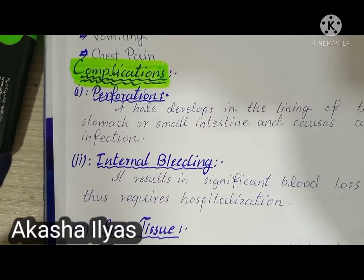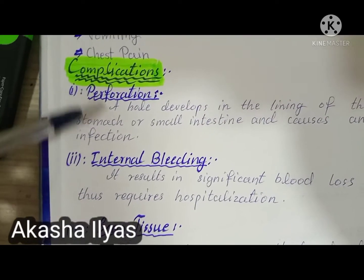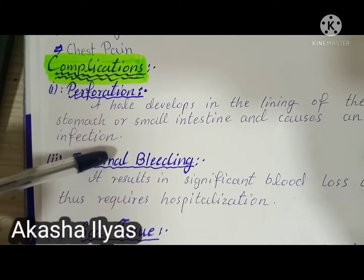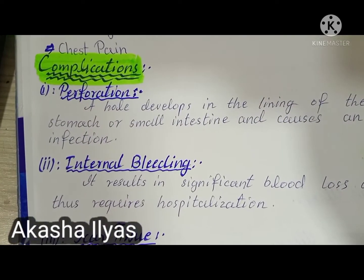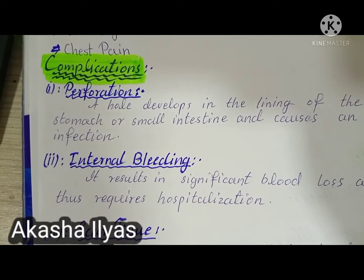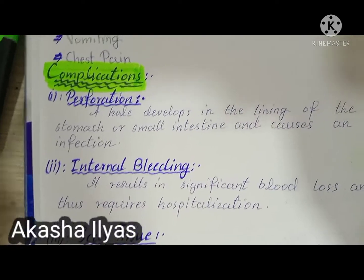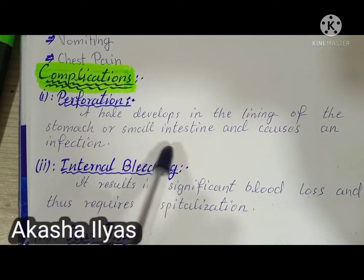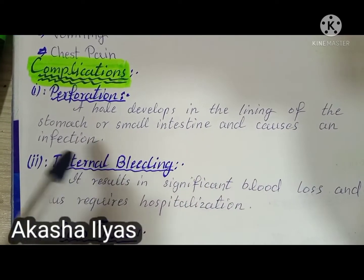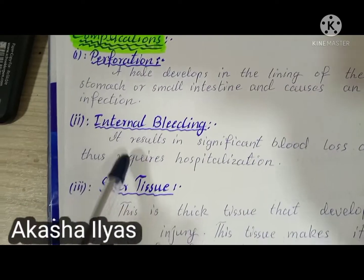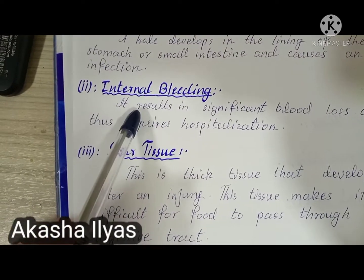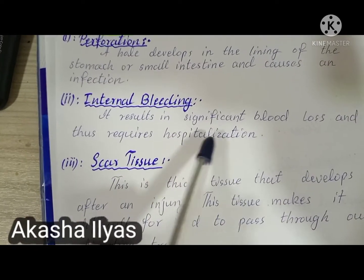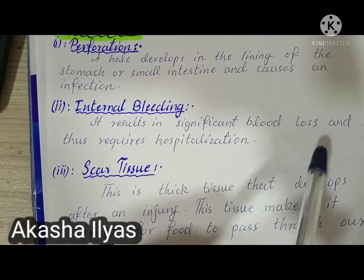There are three complications of peptic ulcers. The first is perforation — a hole that develops in the lining of the stomach or small intestine, causing infection. The second is internal bleeding, which starts when a hole develops and may result in significant blood loss.